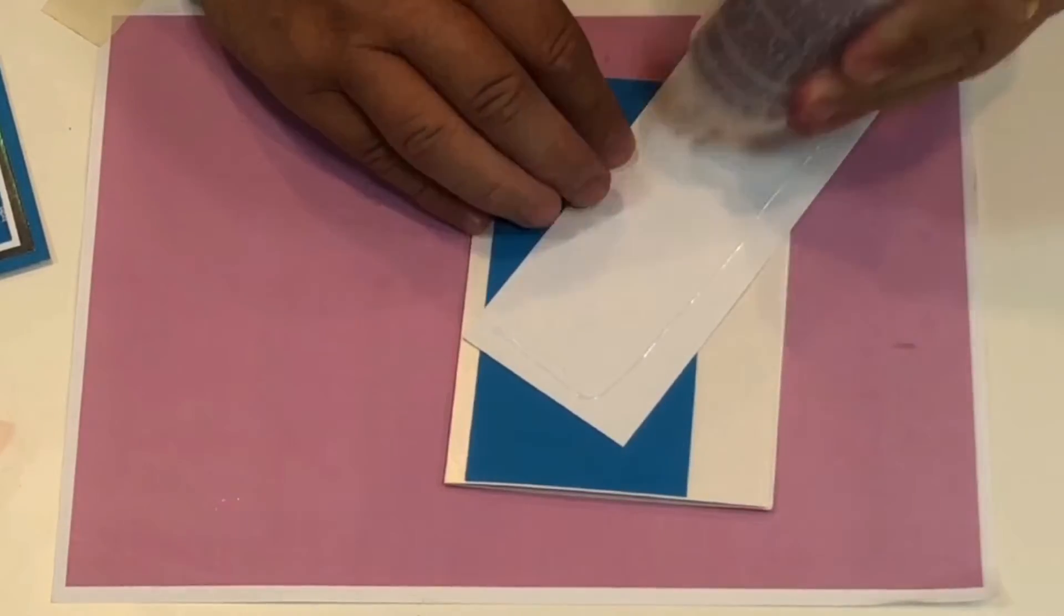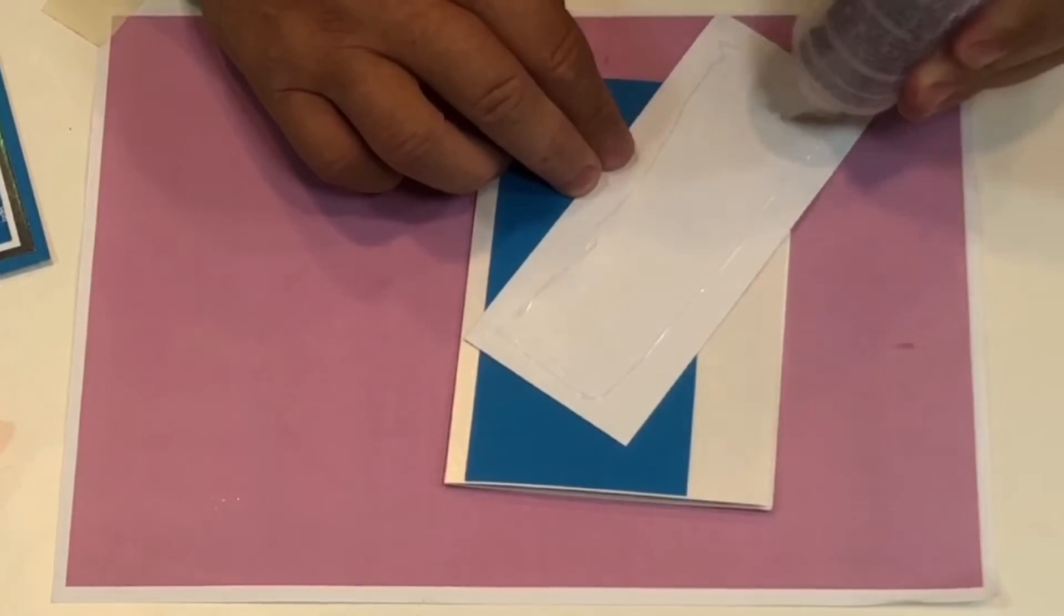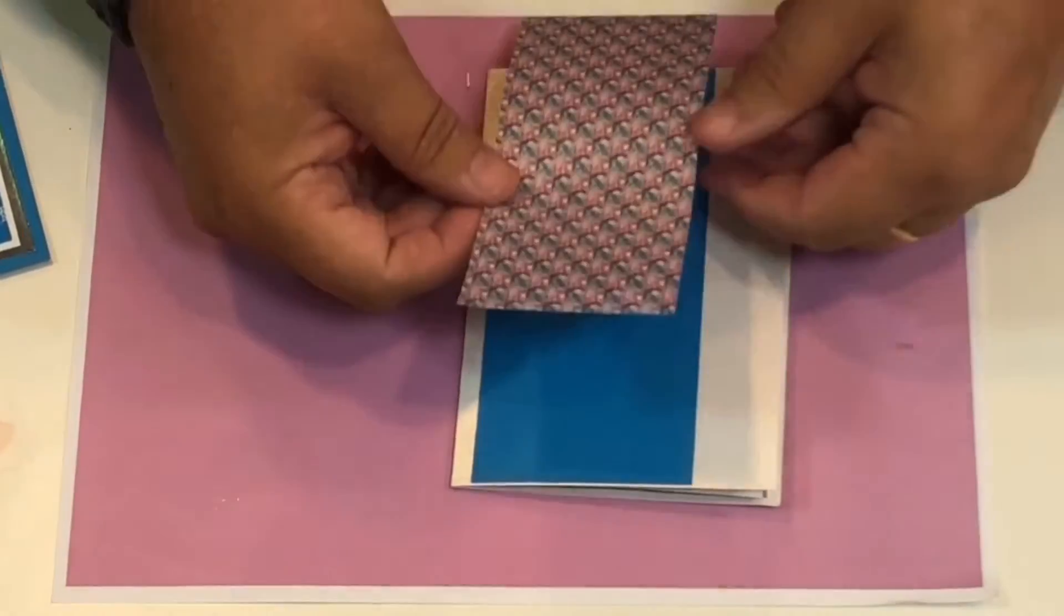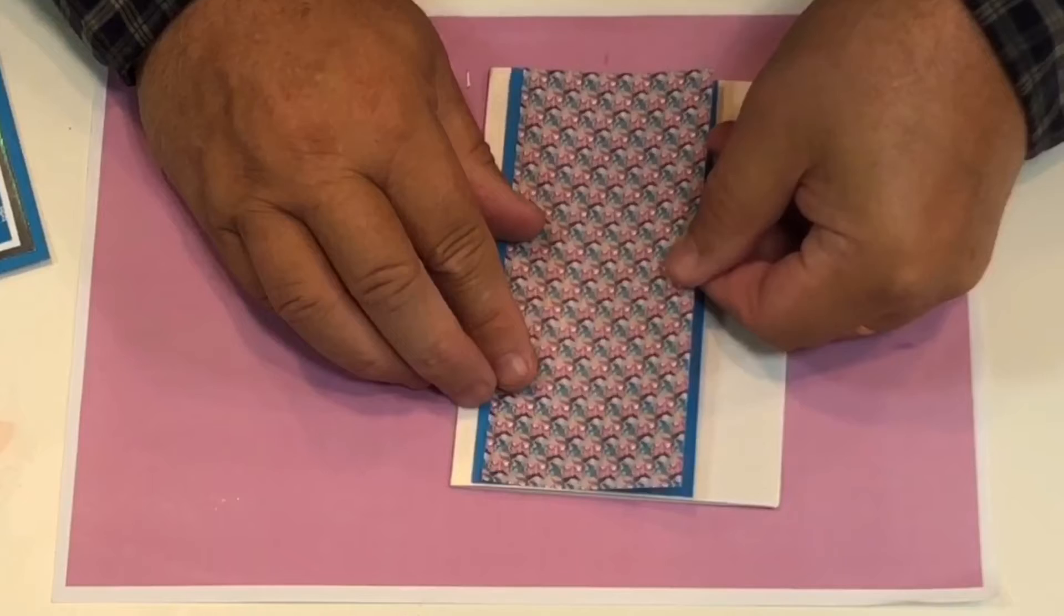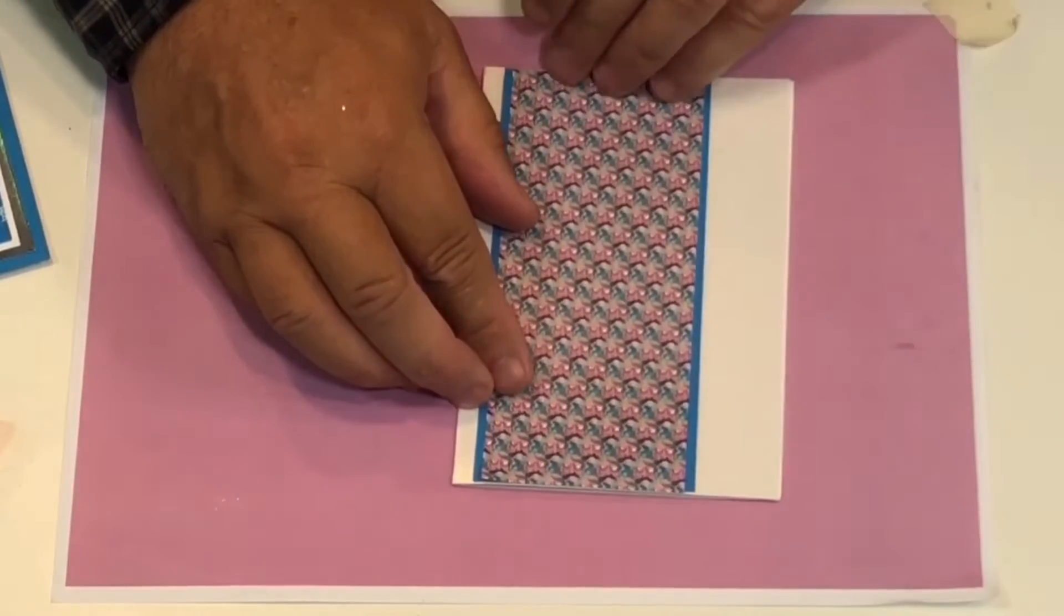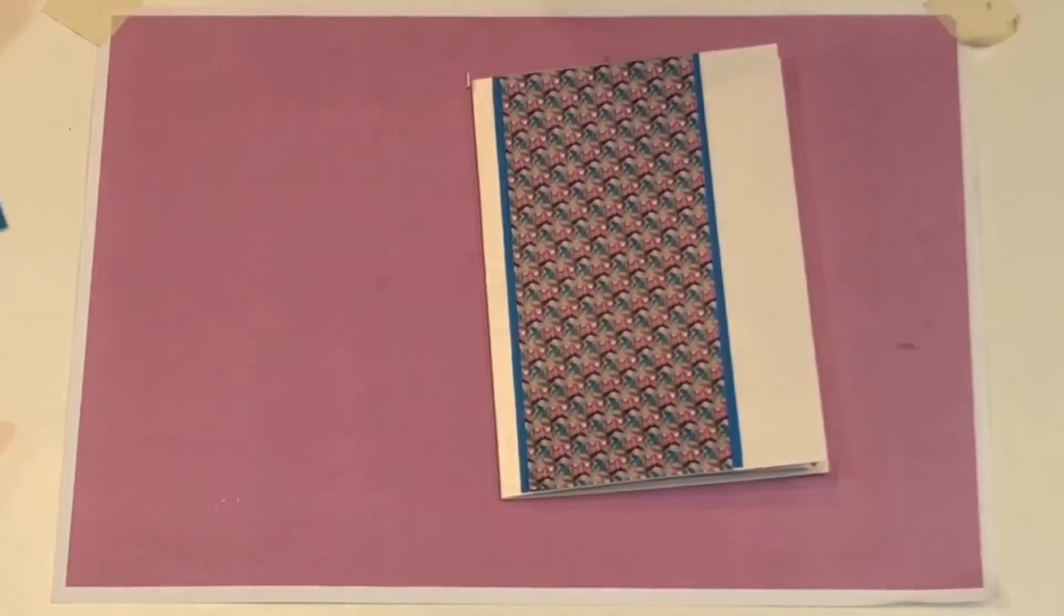And I need to declutter my glue head, it's all building up a bit there, and that's going to go down the middle there. Line that up so you just get a hint of the blue either side.